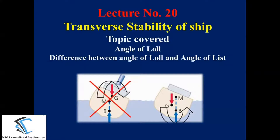Hello everyone. This is lecture number 20 of the lecture series of Naval Architecture, made for MEO examination. In this lecture we are going to discuss transverse stability of the ship, specifically the angle of Loll, the difference between angle of Loll and angle of List, and how to take remedial action to reduce the angle of Loll.